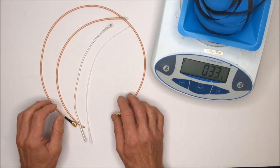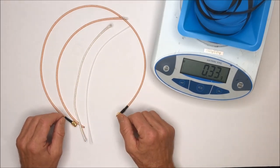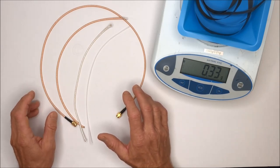And at Dexmat we have been wanting to replace the shielding braid with a CNT product. We have finally achieved that using our CNT tape.